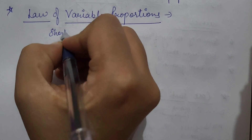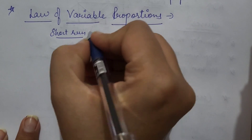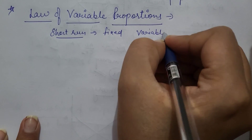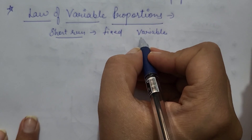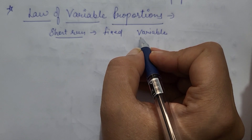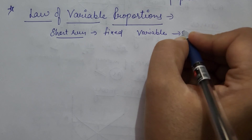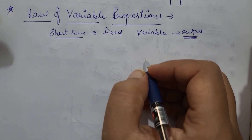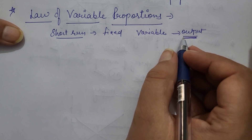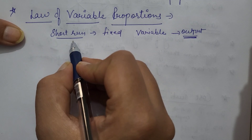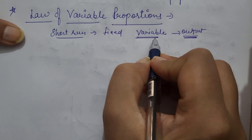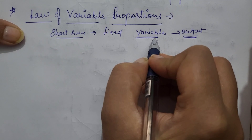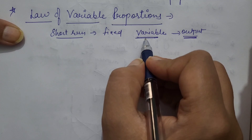In the short run, there is a time period in which some factors are fixed and some are variable, and from the combination of these two factors we derive our production and output. In order to increase output, if a producer wants to increase output, he cannot change his fixed factors in the short run, so he will change his variable factors. But the law of variable proportions studies this concept with only one variable factor.